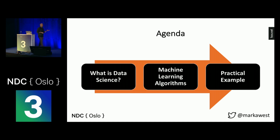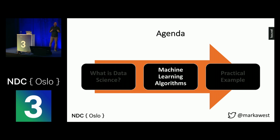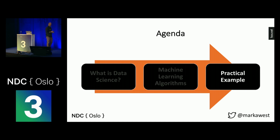My talk is split up into three sections, so if you fall asleep in one of them and wake up for the next one, you'll still get some benefits. I'm going to start off by talking about what data science is, define it, talk about how it relates to machine learning, and how you can get started with your own data science projects. I'll then cover some machine learning algorithms — the most common ones. I'm not going to talk about neural networks today. And finally, I'm going to run through a practical example using some open source data science tools.